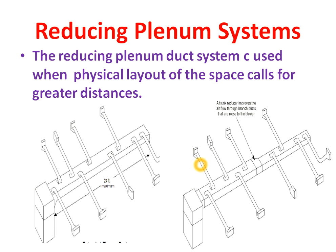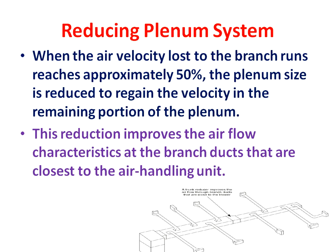We will now see in detail how we achieve this. This is the diagram of the reducing plenum system and how we reduce the duct. Suppose these are the branch ducts and this is the main duct. If the velocity in a branch duct is near 50% of the main duct velocity, then we reduce the cross-sectional area of the main duct. Due to this reduction in cross-sectional area, there will be proper balancing of air in all the branch ducts.